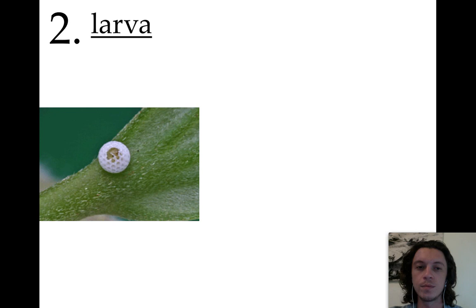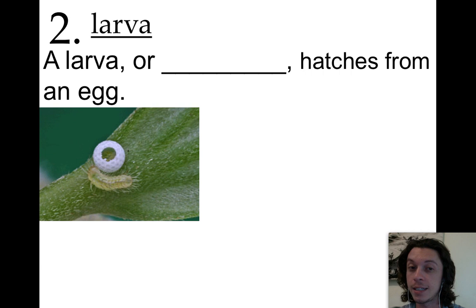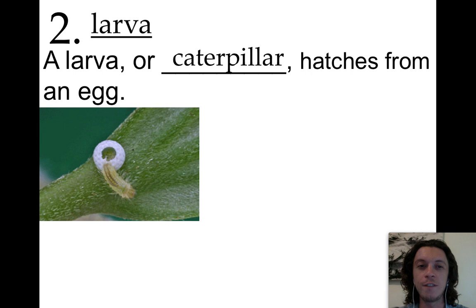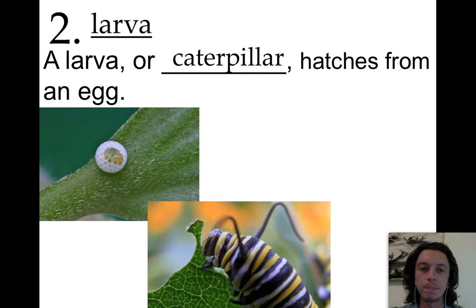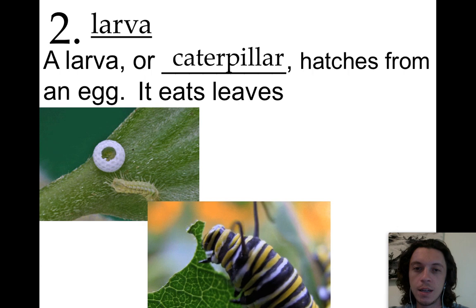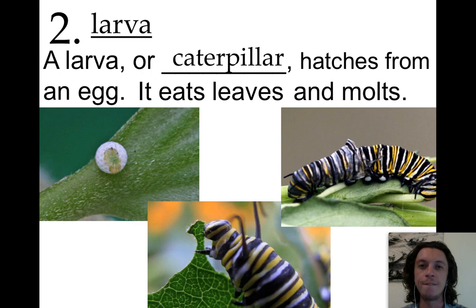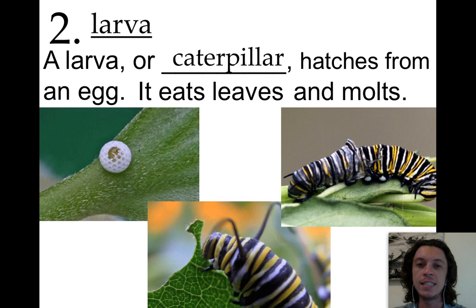Let's review. Number two is larva. A larva or caterpillar hatches from an egg, then it eats leaves, and it molts.